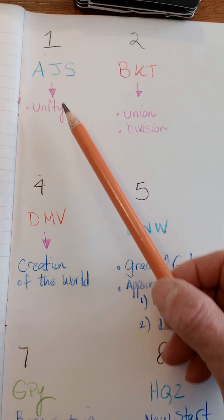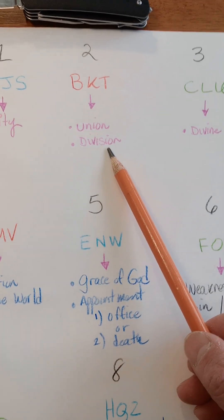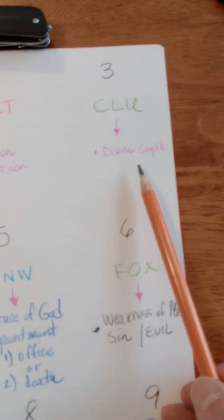This is one interpretation, and there might be others out there. One is unity. Two is for union or division. Three is for divine completeness.